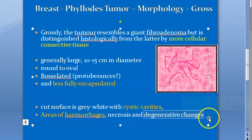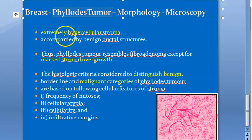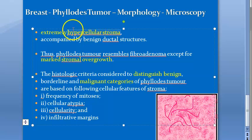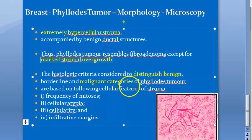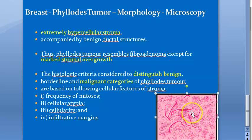On microscopy, the stroma is extremely hypercellular with marked stromal overgrowth. It is accompanied by benign ductal structures, and the ducts are compressed into leaf-like appearances — that characteristic phylloides pattern.